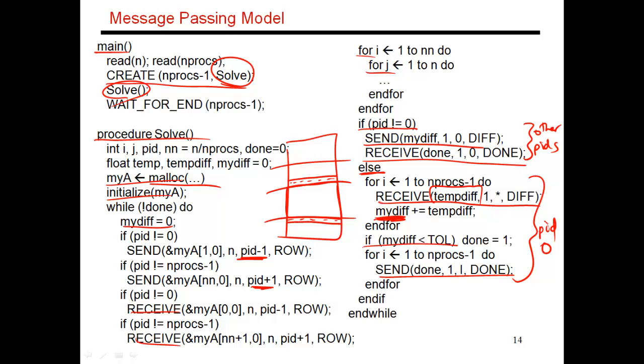The master thread receives the values, does the increments, and then sends back the result to everybody else. So your program is full of these sends and receives. And the programmer is responsible for all of this explicit communication of data.